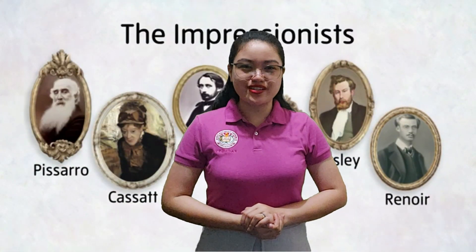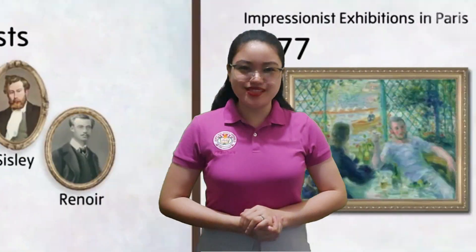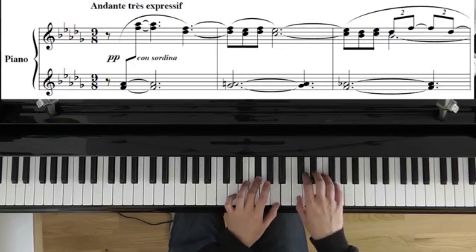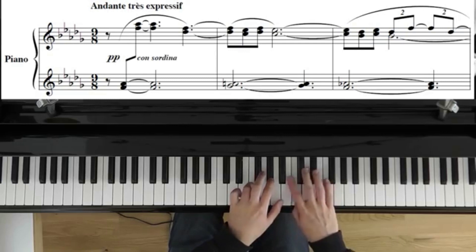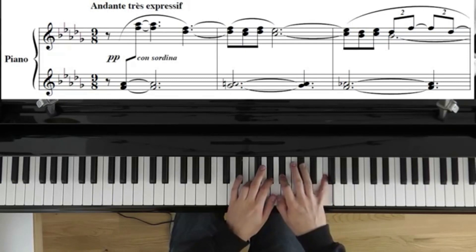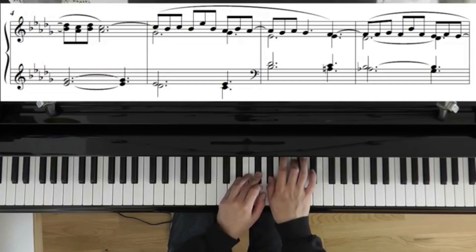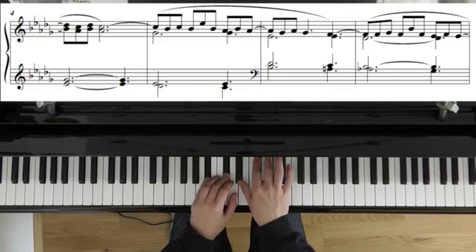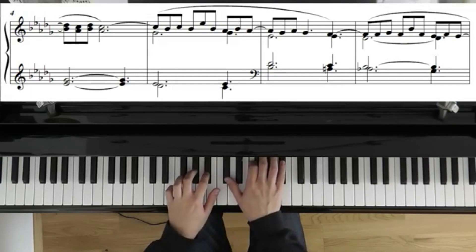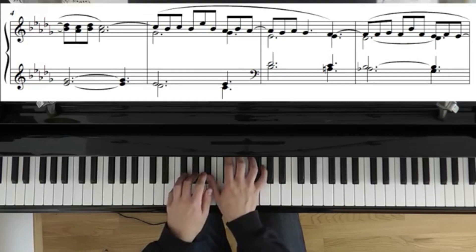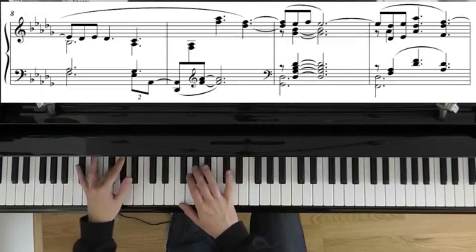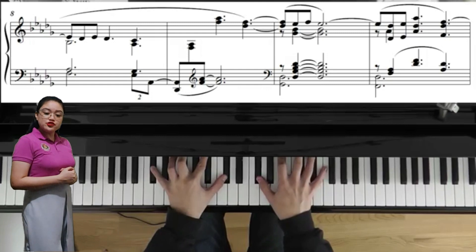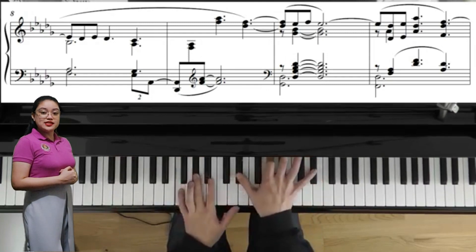Let's listen to this example of Impressionist music: Clair de Lune, a movement by Claude Debussy. The whole idea with Impressionism was that musicians and artists were drawn to convey moods with their music instead of distinct melodic lines.